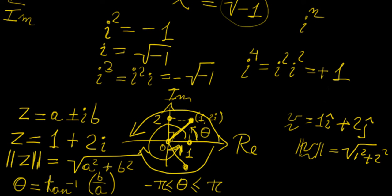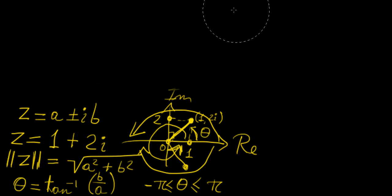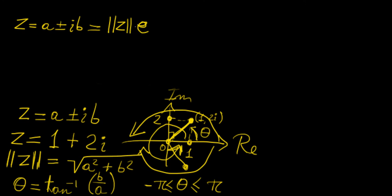This is very interesting because it tells us that we can represent a complex number using a different kind of notation. A complex number z equals a plus or minus ib is equal to its magnitude times e to the power of i times theta, where e is the Euler number. That is a very powerful definition. We'll look more into it in future videos, but for now just know that you can represent a complex number in this exponential form, using the magnitude and the angle with the real axis.